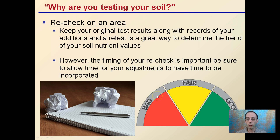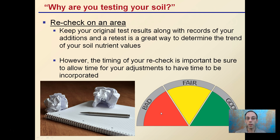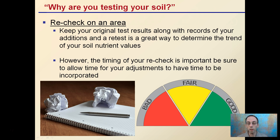You could also recheck an area. So if you had an area that was kind of bad or a problem area, keep the original test with your records and the additions that you added. Then retesting is a great way to determine the trend of your soil — are you getting into fair, hopefully better or improved, or those good conditions? However, the timing of your recheck is important.